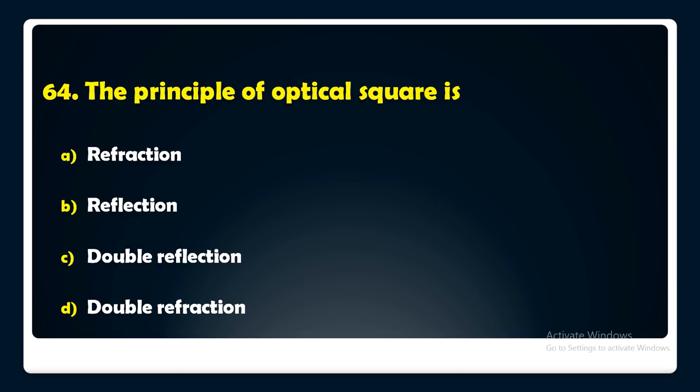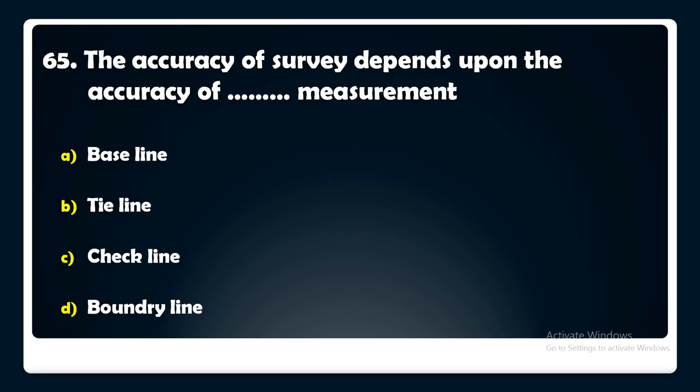The accuracy of a survey depends upon the accuracy of which measurement — baseline, tie line, check line, or boundary line? The answer is: the accuracy of a survey depends upon the accuracy of the baseline measurement.